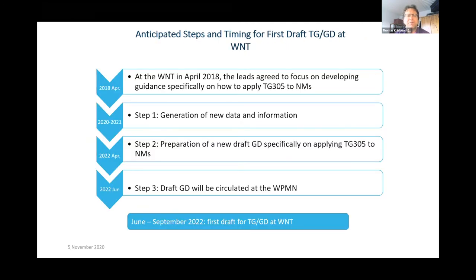The bioaccumulation project started in April 2018, when the leads were agreed. Generation of data took place in 2020 to 2021. Preparation of a new draft guidance document specifically on applying test guideline 305 to nanomaterials is foreseen for April 2022. The draft guidance document will be circulated at WPMN and later at WNT level, foreseen for the end of 2022.